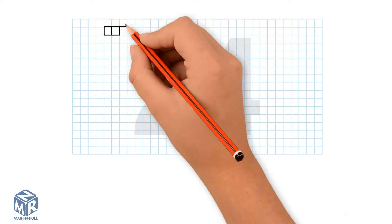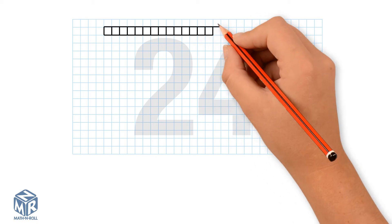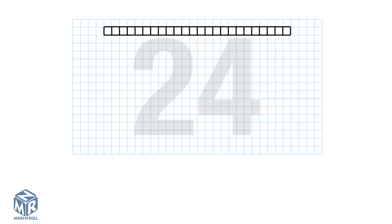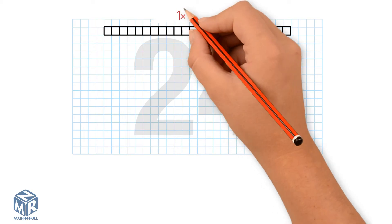How many factor pairs does 24 have? We can use arrays to model the factors. Using 24 tiles, let's try to make as many different arrays as we can. Let's first make a 1 by 24 array. We have 1 row and 24 columns. This represents 1 times 24.